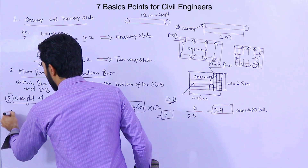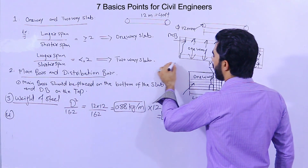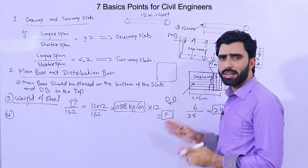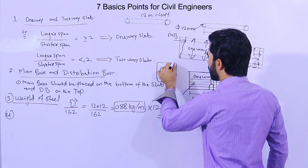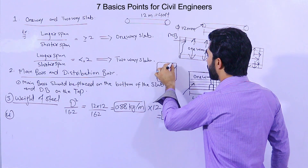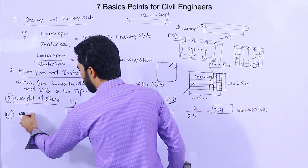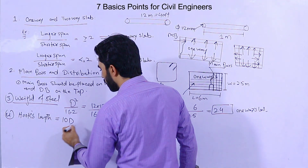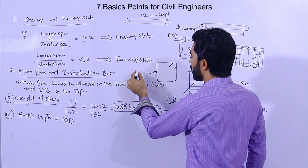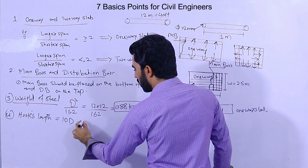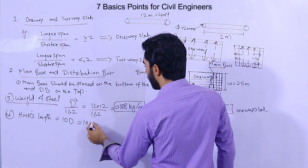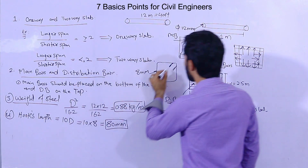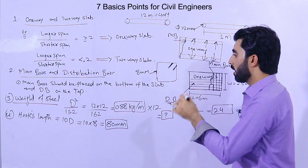The fourth point is the hook length for stirrups in beams and lateral ties in columns. The hook length formula is 10d or 9d, where d is the diameter of the steel rod. For example, if the diameter is 8mm, then 10 × 8 = 80mm is the required steel length for the hook.